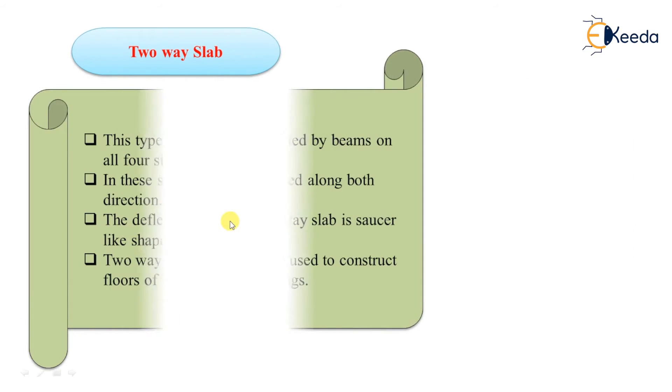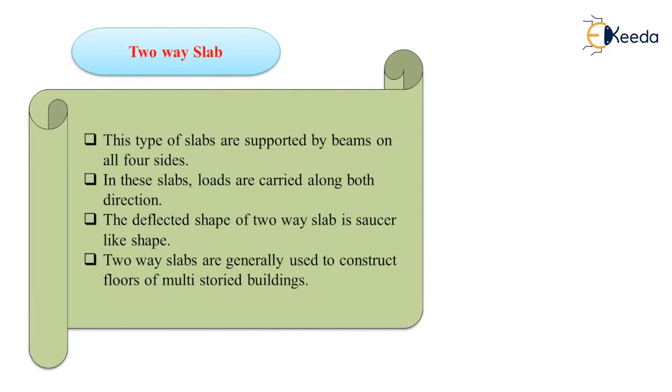Two way slabs are supported by beams on all four sides and the bending takes place in both direction. Hence, the deflected shape of this slab is dish or saucer like shape. For construction of floor in multi-story building, these slabs are generally used.